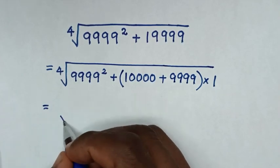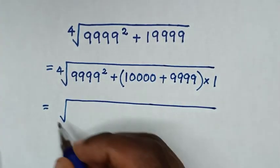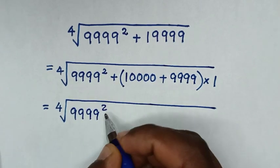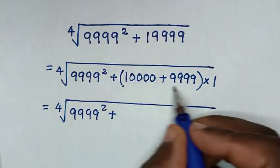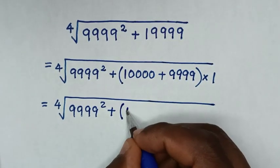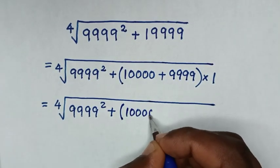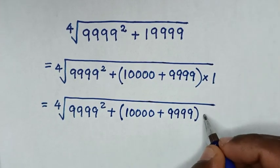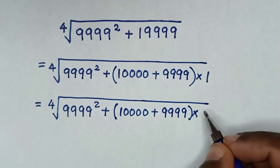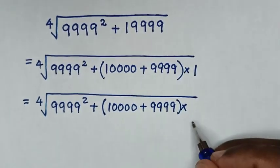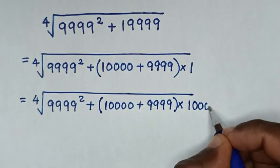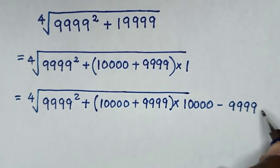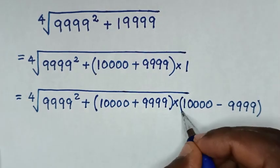It will be equal to the 4th root of 9999 squared, plus bracket (10,000 plus 9,999) bracket, times (10,000 minus 9,999) bracket.